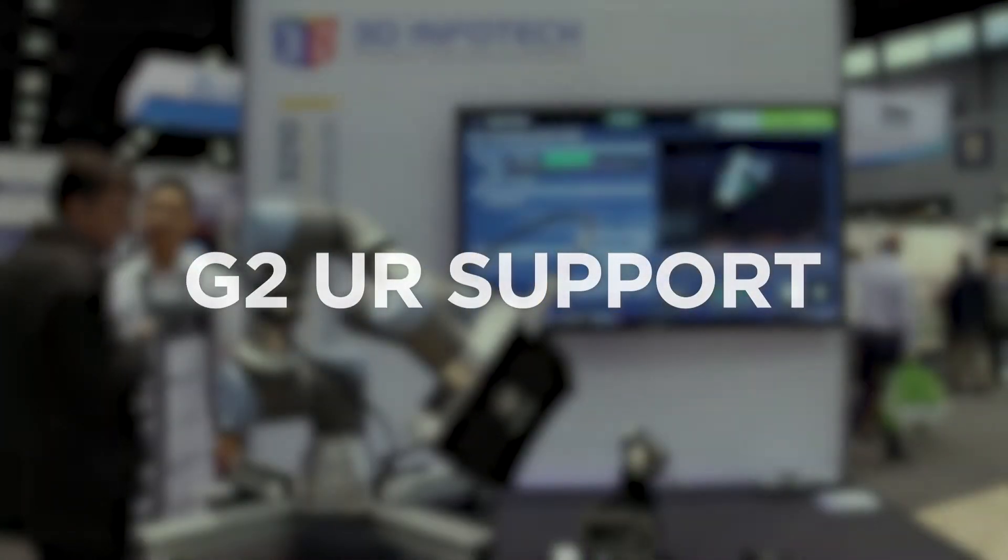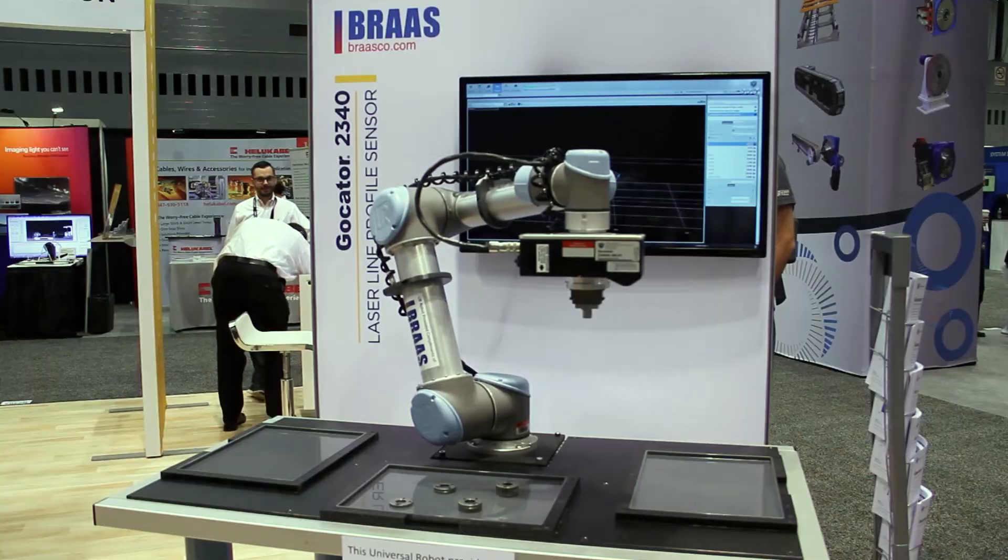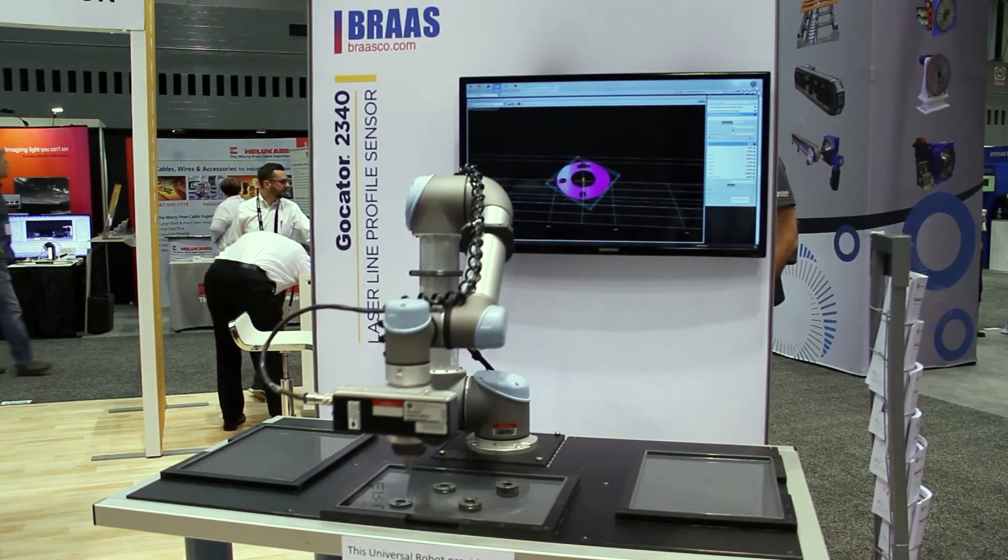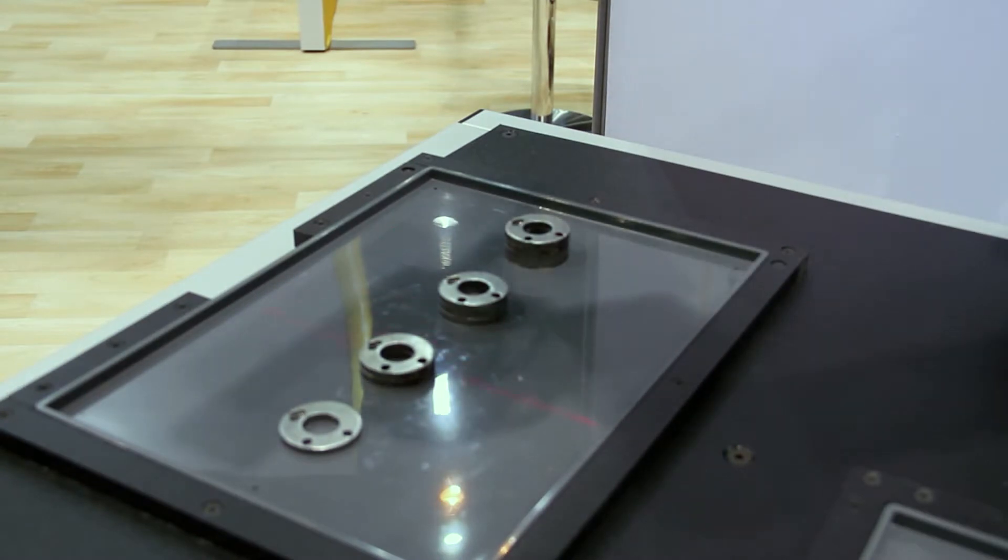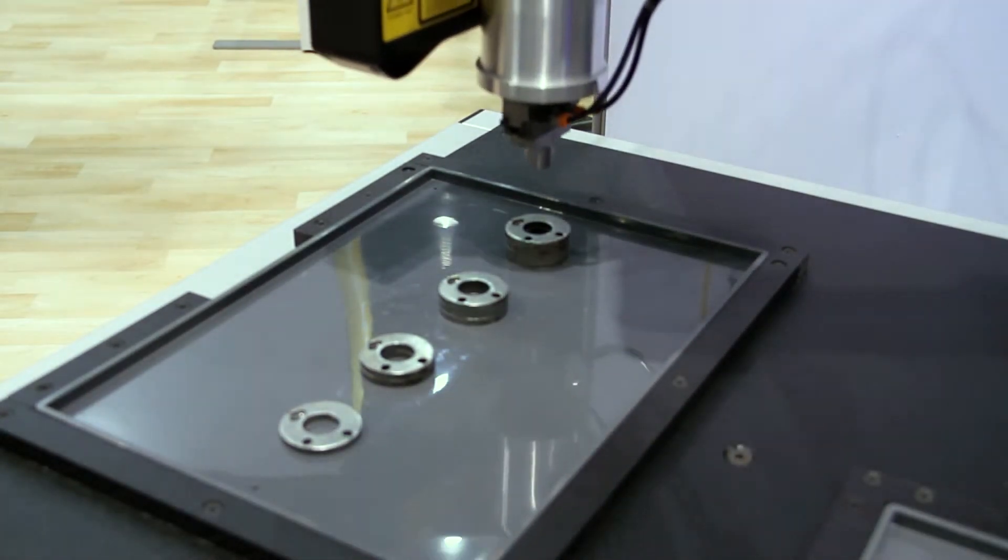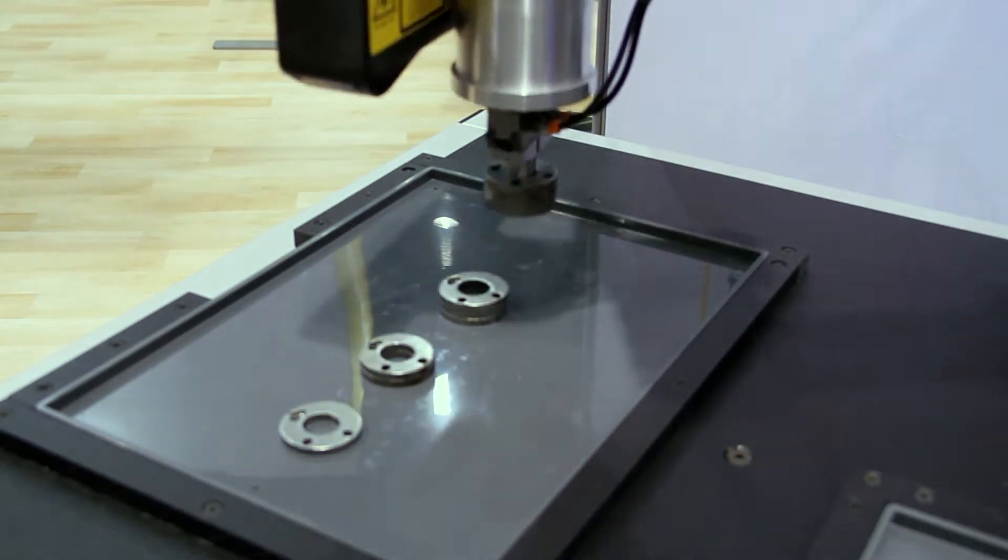GoCator now supports integration with UR cobots for both 3D snapshot sensors and 3D line profilers. Easy UR integration with the GoCator line profilers allows users to implement a complete vision-guided robotic solution with minimal cost and development time.